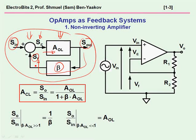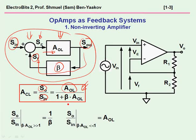The expression for the output-to-input transfer ratio for a feedback system in closed loop is shown here. It is equal to the gain of the amplifier divided by 1 plus beta-a. We call this the loop gain. When the loop gain beta-a is much larger than 1, the 1 can be neglected, A divides out, and the gain will be 1 over beta.